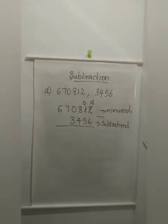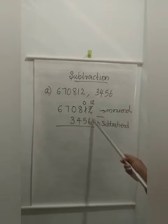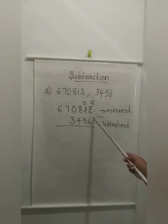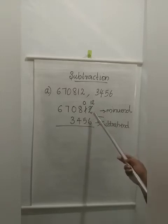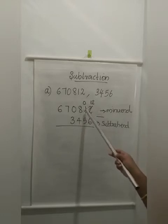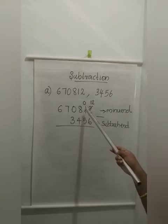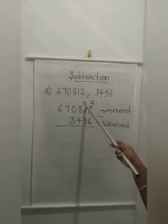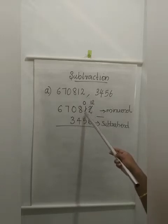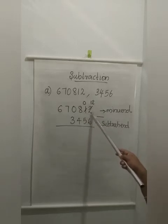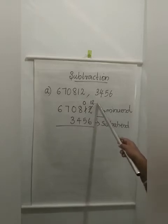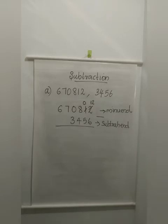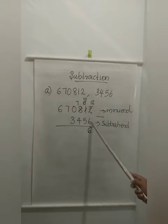Subtracting. First, comparing the digits in the ones place: here it is 6 and here it is 2. So we have to subtract 6 from 2. Can we subtract 6 from 2? No. So here we have to borrow from the next digit. What is the next digit here? 1. So from the very next digit, we are borrowing. The digit is 1, so if I borrow 1, what is remaining here? 0. And this 1 is shifted here — the place value of this 1 is 10. So that 2 becomes 12. Now you can subtract 6 from 12. So 12 minus 6 is 6.